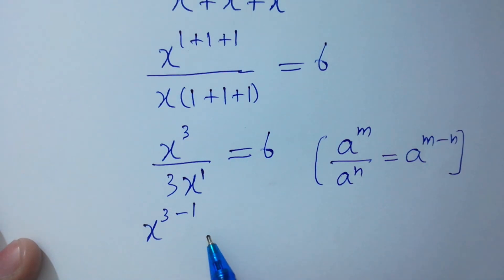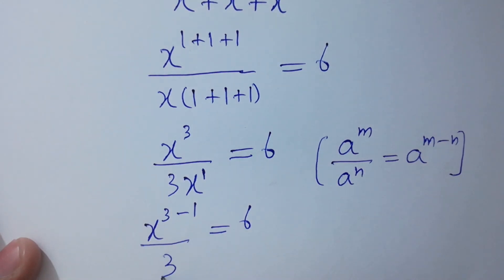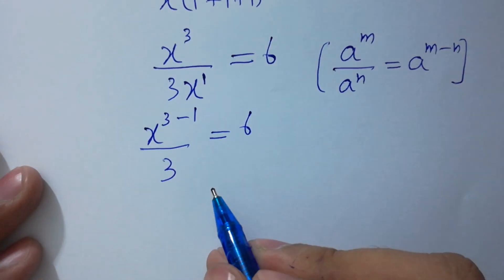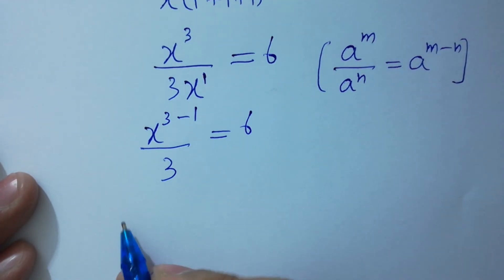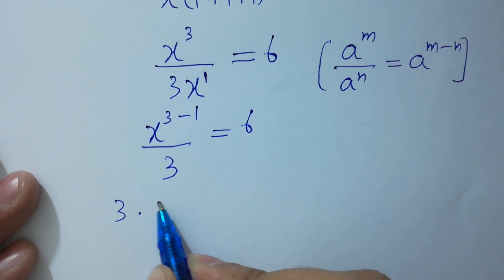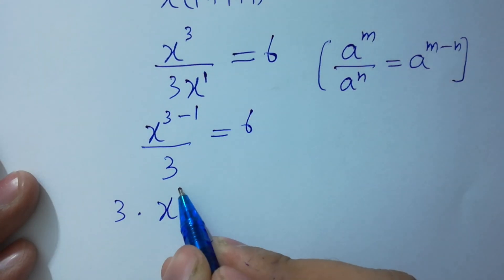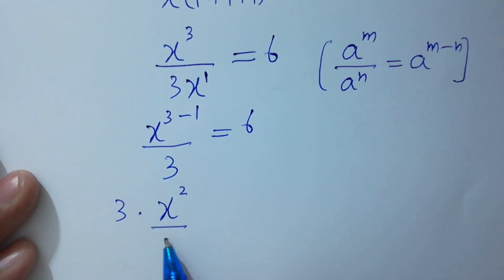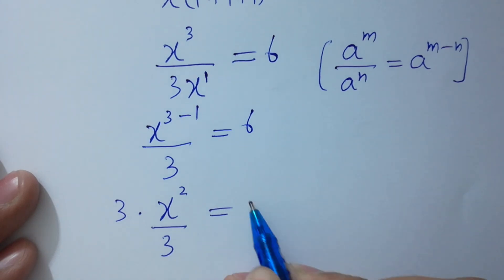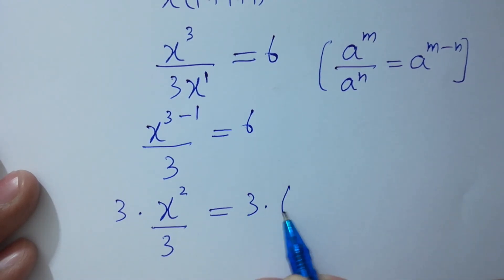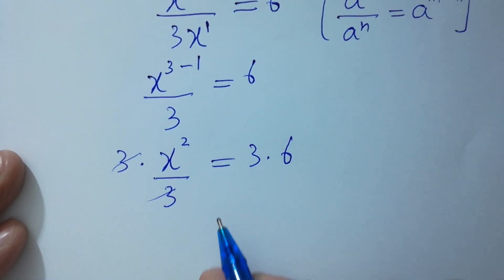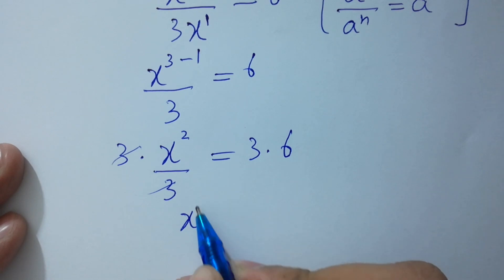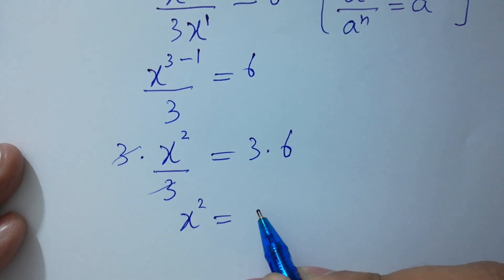In the next step, x to the power 3 minus 1 over 3 equals 6. Now I am going to multiply by 3 on both sides: 3 times x to the power 3 minus 1 over 3 equals 3 times 6. Here 3 and 3 will be cancelled.